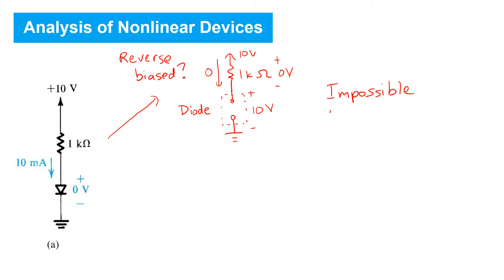Since no forward voltage drop can appear across the ideal diode. Therefore, we must have made an error in our original assumption.